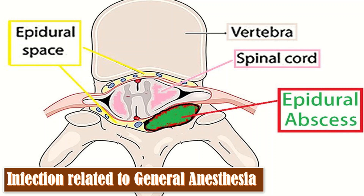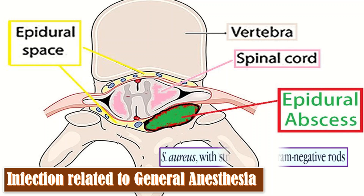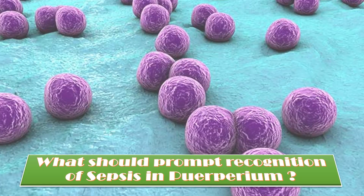The usual organisms responsible for spinal abscess are Staphylococcus aureus, streptococci, gram-negative rods, and sterile specimens, each accounting for approximately 15%. It is vital to consider the diagnosis, investigate, and treat in a timely manner, as permanent spinal cord or cauda equina damage may result if neural compression is prolonged.